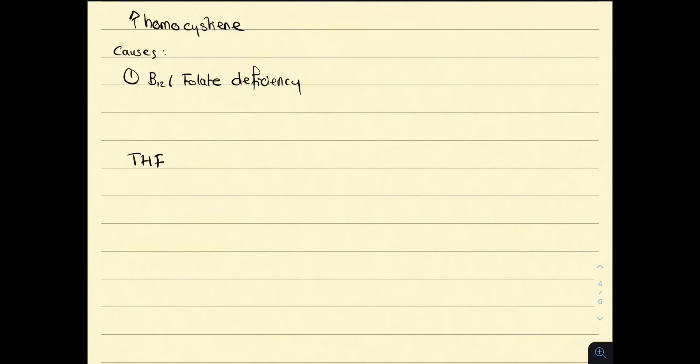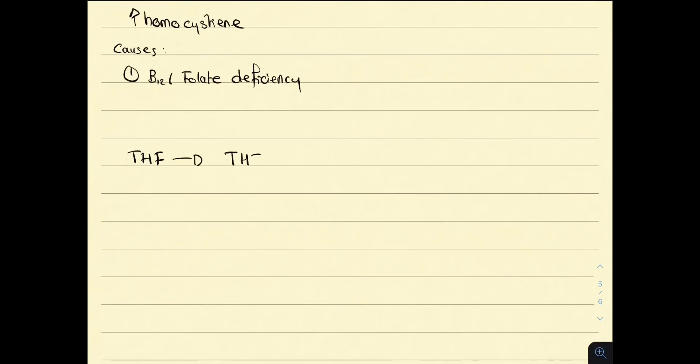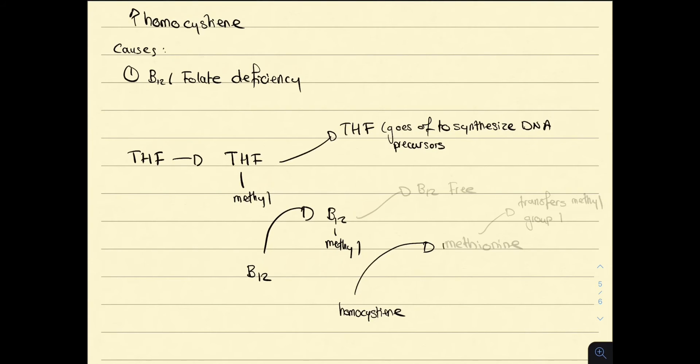Let us start with B12 and folate. When we consume folate, it is converted to tetrahydrofolate. This is rapidly methylated. B12 sees this and takes the methyl group off tetrahydrofolate. So we end up with B12 attached to a methyl group and free tetrahydrofolate, which goes off to synthesize DNA precursors. Now homocysteine sees this and takes the methyl group off B12. So the B12 is now free and homocysteine is converted to methionine. Methionine goes off and transfers methyl groups elsewhere.